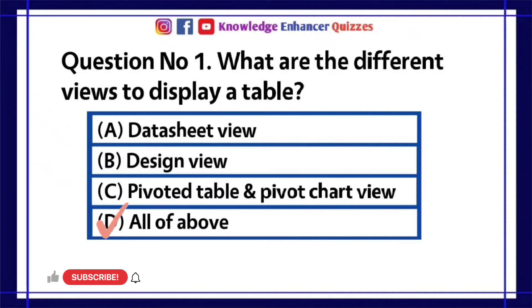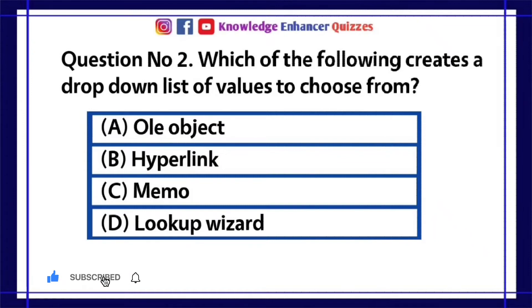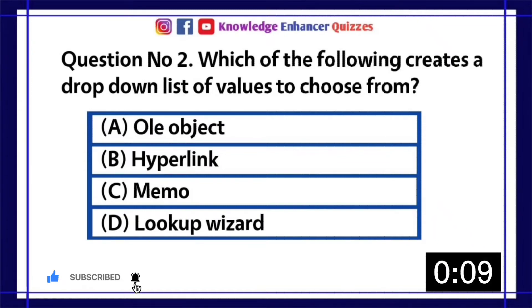Question number two: Which of the following creates a drop-down list of values to choose from? A) All object, B) Hyperlink, C) Memo, D) Lookup Wizard. Option D is the right answer.